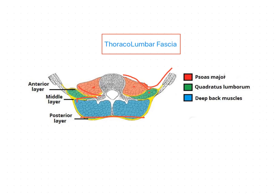So the structures forming the posterior abdominal wall are: the skeletal framework, the muscles attached to it, and these muscles are covered by the intervening fascia — the psoas fascia and the thoracolumbar fascia.